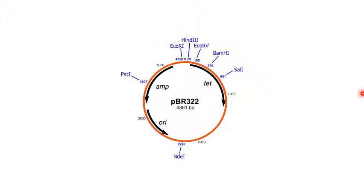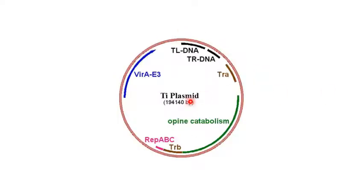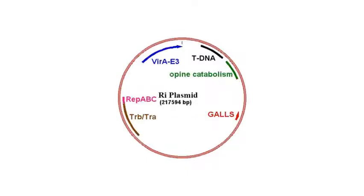Examples of cloning vectors include pUC19 — which has an ori site, selectable markers, and multiple cloning sites — and pBR322, which has an ori site, ampicillin and tetracycline resistance as selectable markers, and a range of restriction endonuclease sites. The Ti plasmid is a plant vector, and the Ri plasmid is a root-inducing plasmid that we will study further in plant biotechnology.